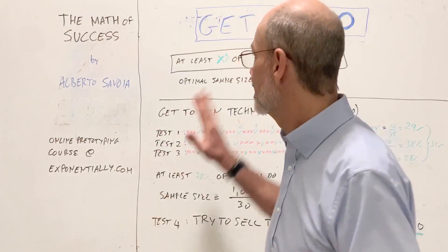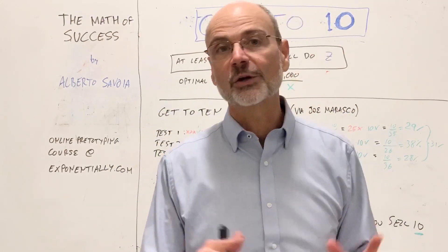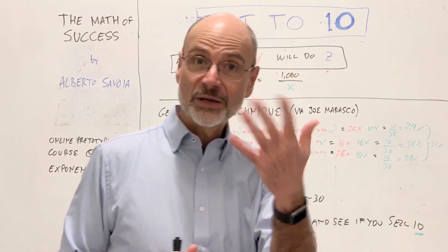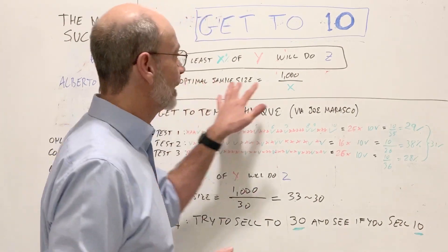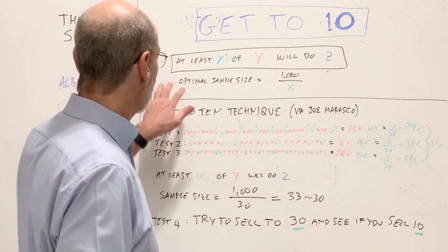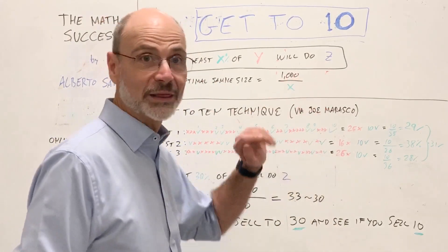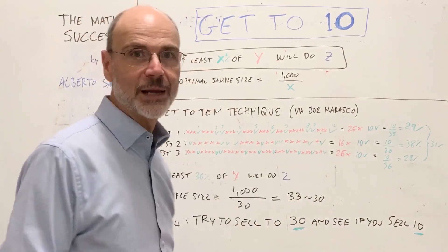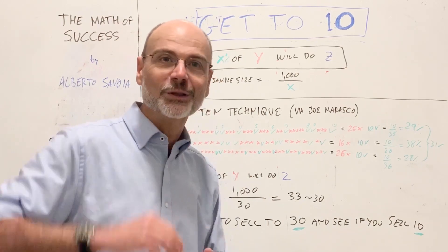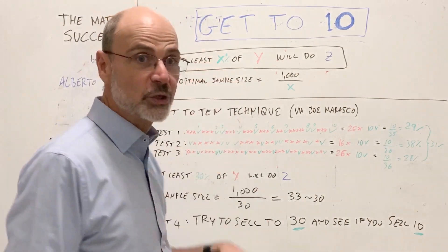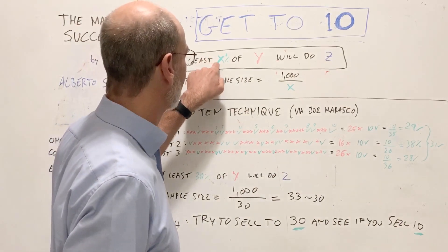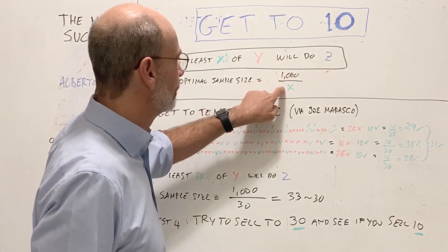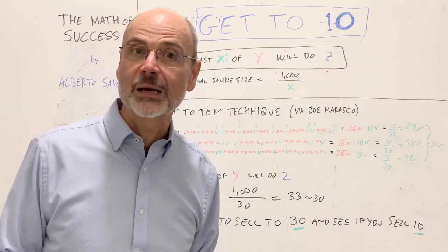This is another question that has to do with sample size. A lot of people wonder: how do I pick the sample size for my Pretotyping experiment? In the previous video, I taught you a very simple formula: the optimal sample size is equal to 1000 divided by X, where X comes from the XYZ hypothesis. If you don't know what that is, go back and watch the videos from the beginning.